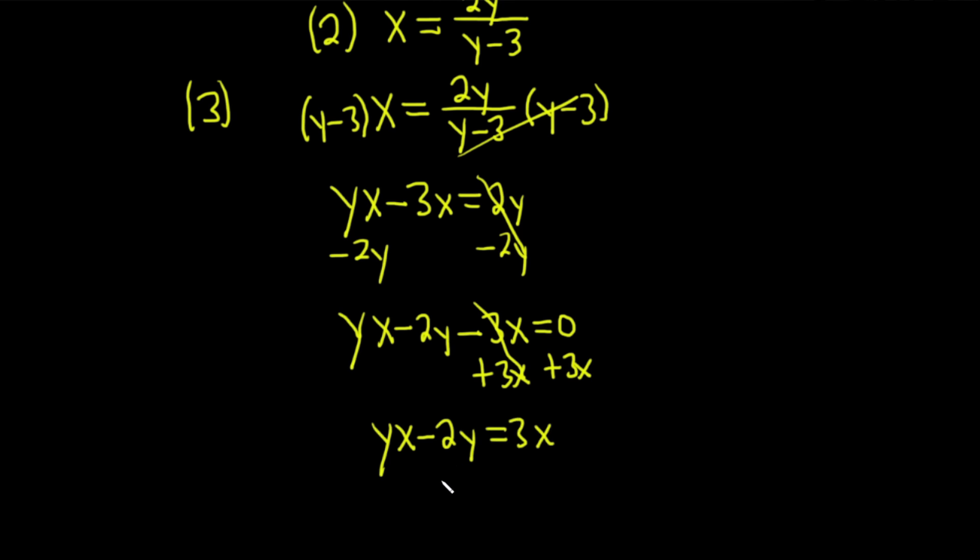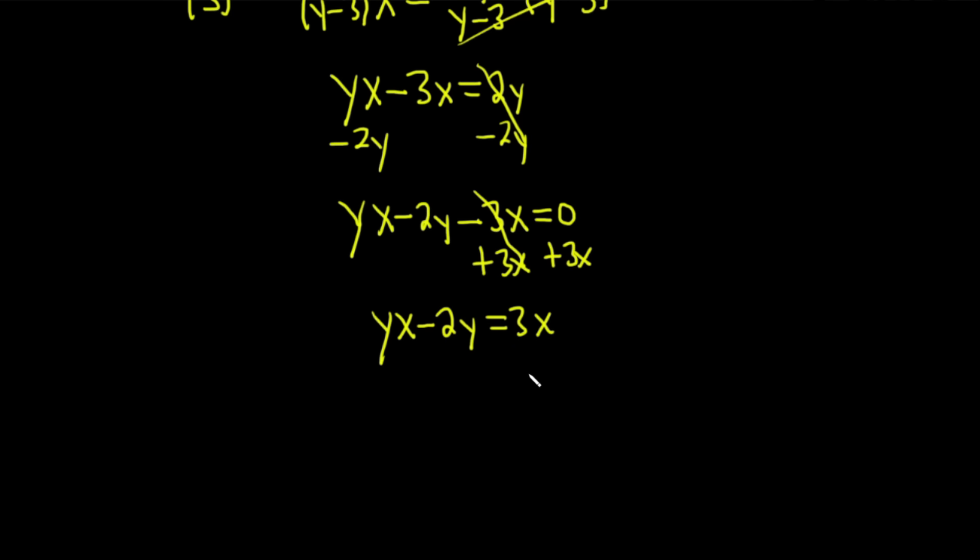And at this point, we can factor out that y, which is what we're looking for. So we have y parentheses, and then here it's just going to be x minus 2. You should always mentally check: y times x is yx, y times negative 2 is negative 2y. Then here we have 3x.